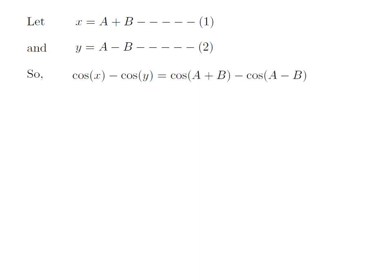So, cosine of x minus cosine of y is equal to cosine of a plus b minus cosine of a minus b. I have just replaced x by a plus b and y by a minus b as per our assumption.